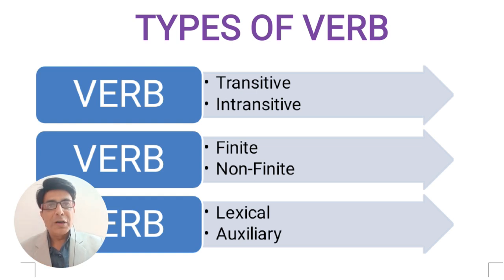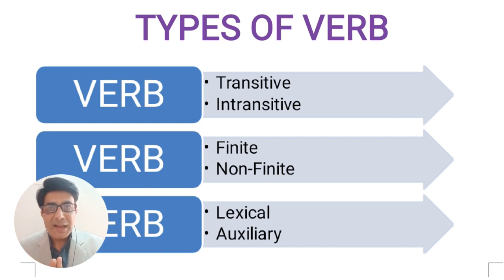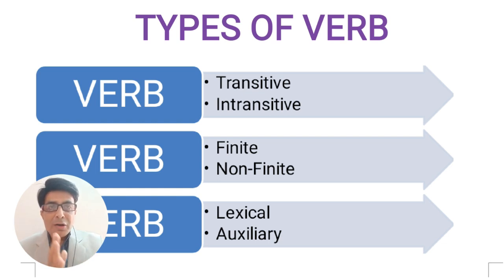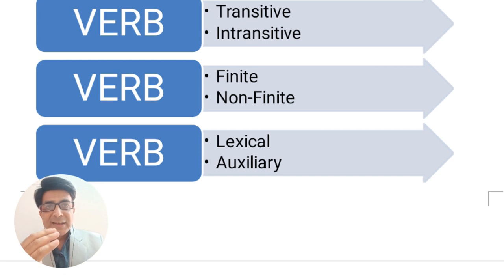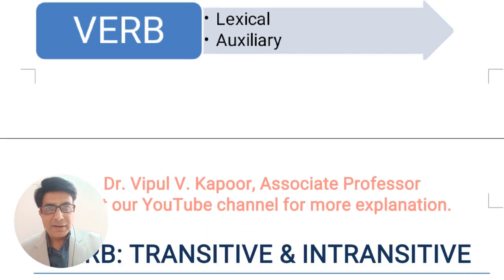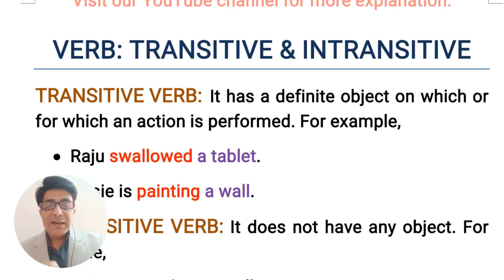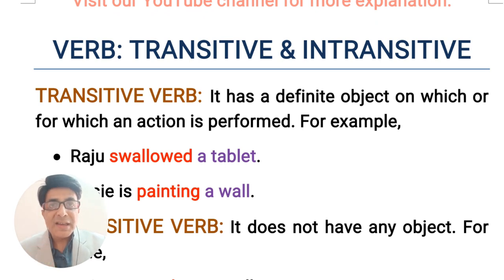Types of verbs. As you can see here on the screen, verbs can be divided in three different manners: verbs can be transitive and intransitive, verbs can be finite and non-finite, and they can be lexical and auxiliary. Now let's see what a transitive verb is.